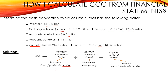So in this case, the inventory conversion period will be $140 million over the $2.777 cost of goods sold per day, which is equal to 50.4 days. So company Z needs 50.4 days to convert the raw material into finished goods and sell them.